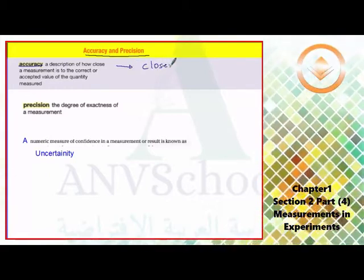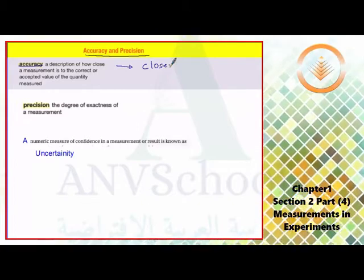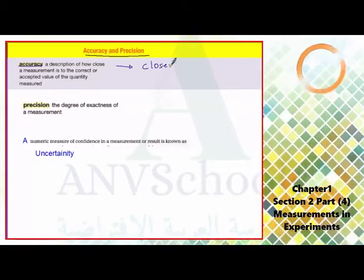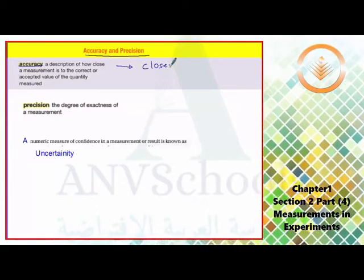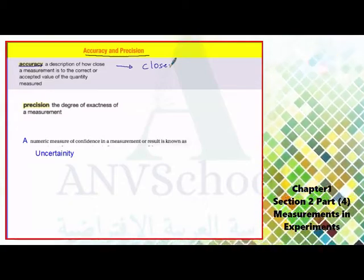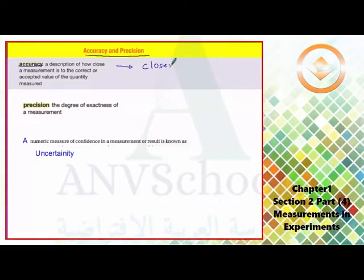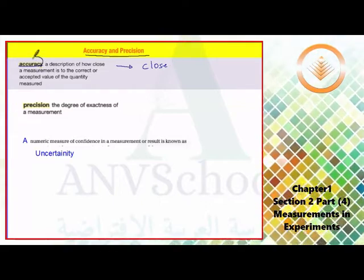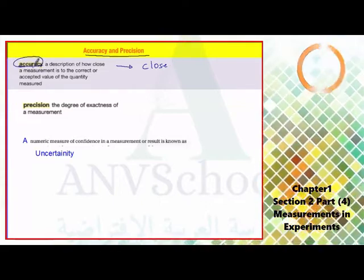So the closeness to the exact one or far away from the exact one is called accuracy. Close or far away from the exact one is described by the term accuracy. Accuracy is defined as the closeness to the exact value.